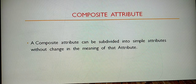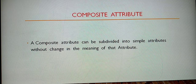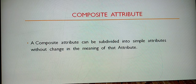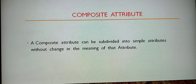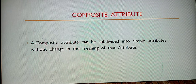A composite attribute is made up of many attributes together. When you subdivide a composite attribute, each part acts as a simple attribute and still holds meaning. A composite attribute can be subdivided into simple attributes without changing the meaning of that attribute.